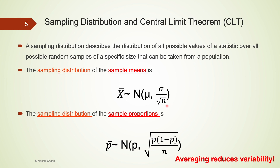We have seen square root n appear in the denominator of the standard deviation of the normal distribution. When our sample size increases — meaning when we take more and more elements in our sample — n goes up, and the standard deviation of the normal distribution decreases. This suggests that the shape of the normal curve becomes narrower and more centered at the mean. That's why we often say averaging reduces variability.